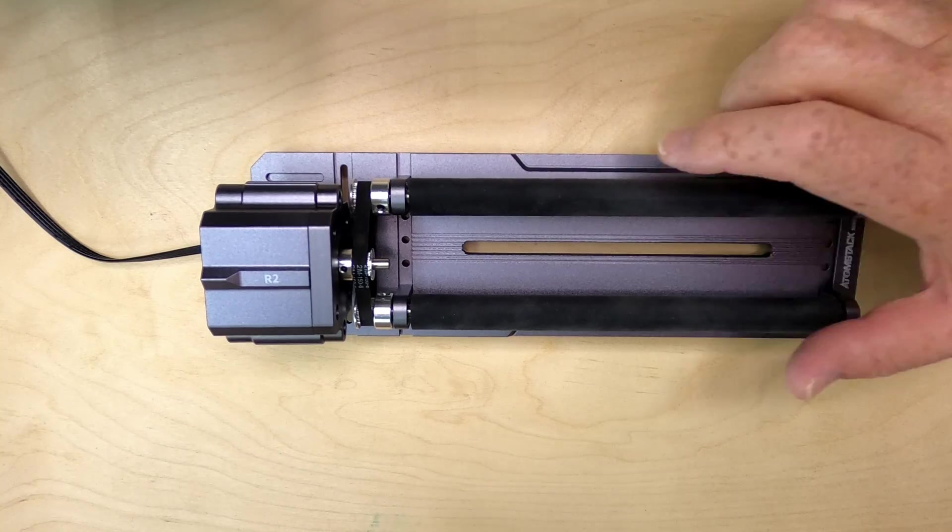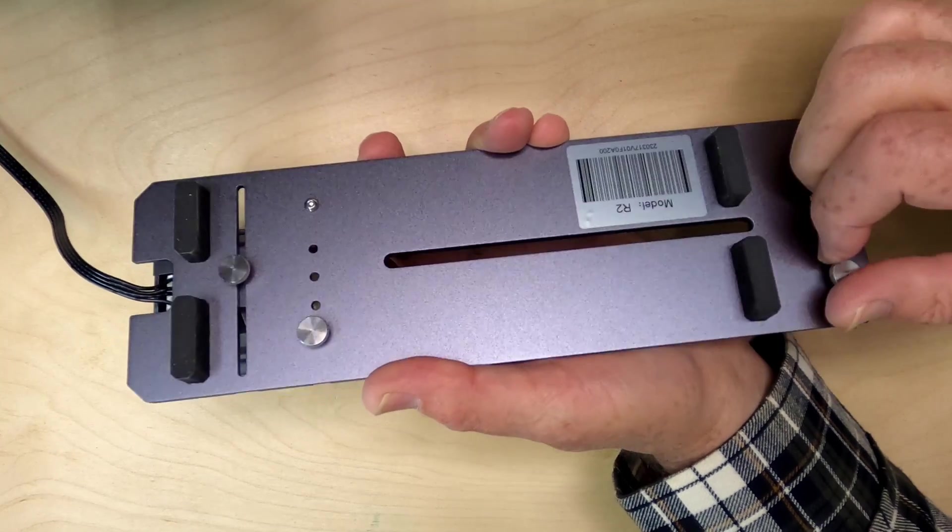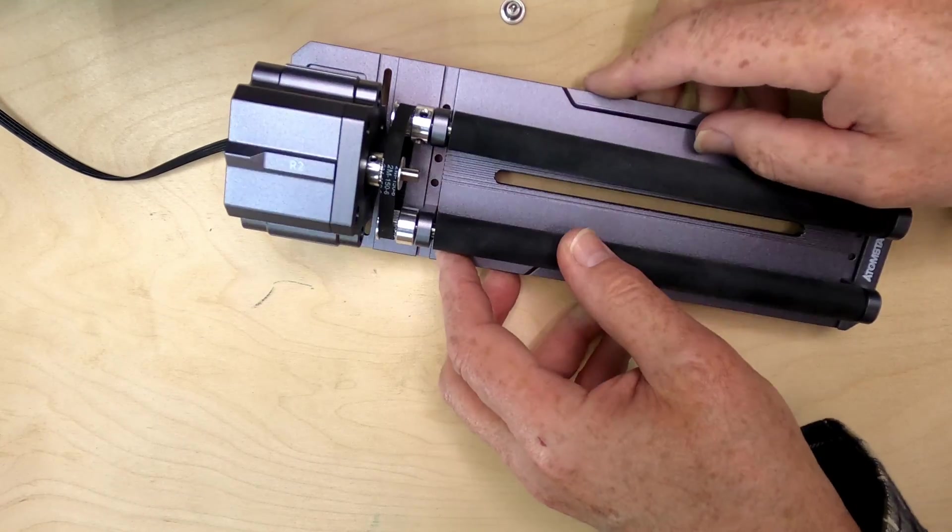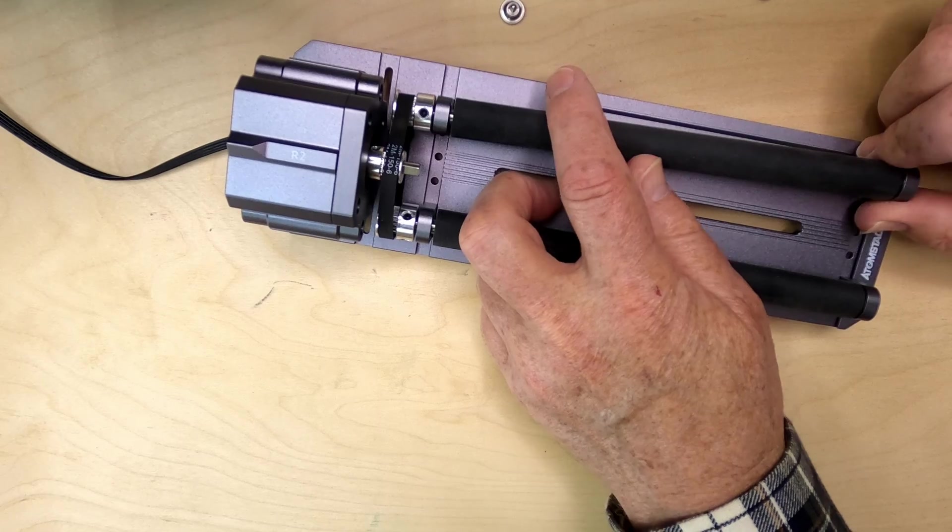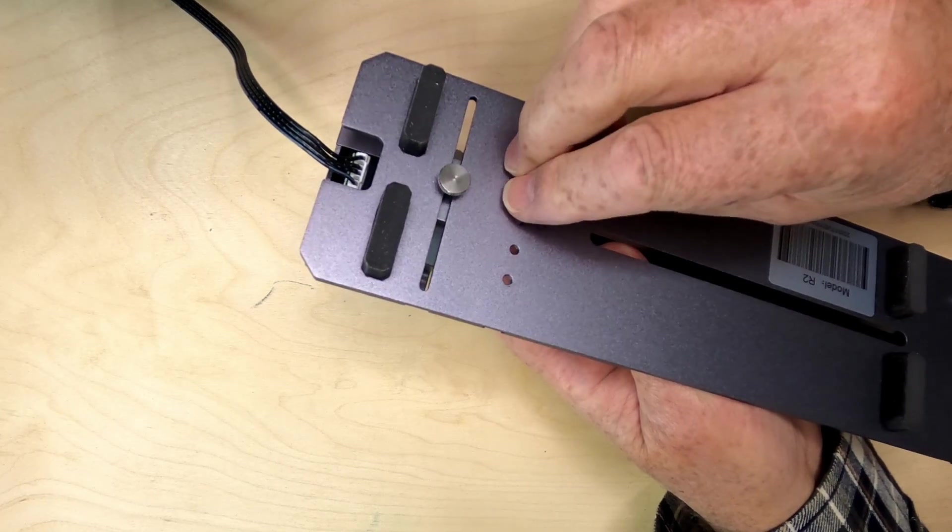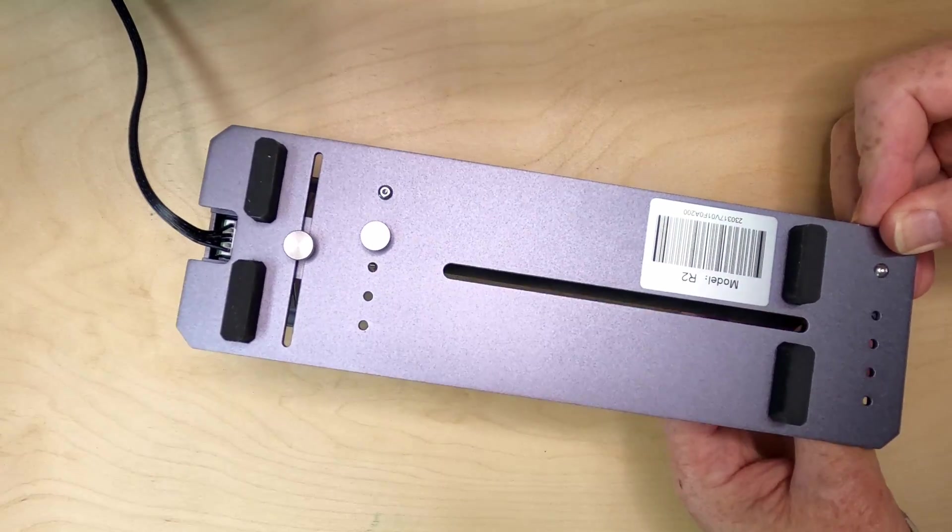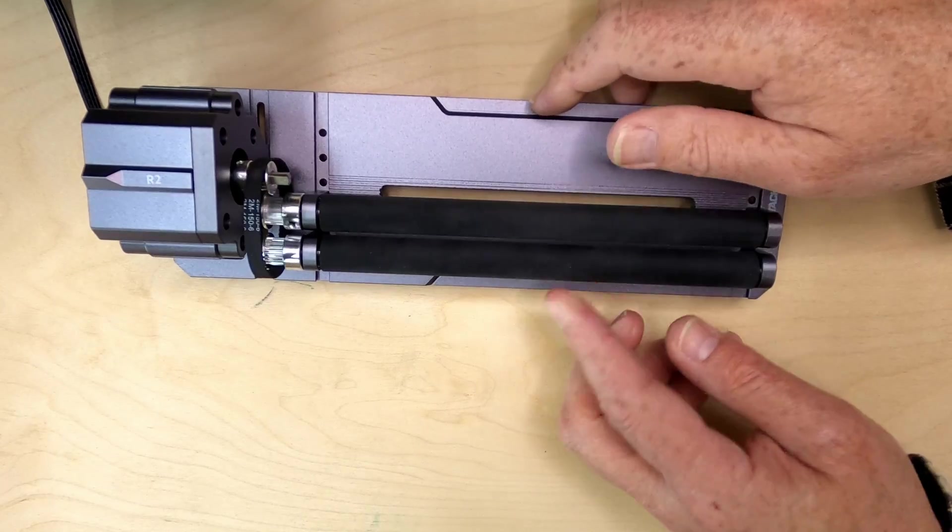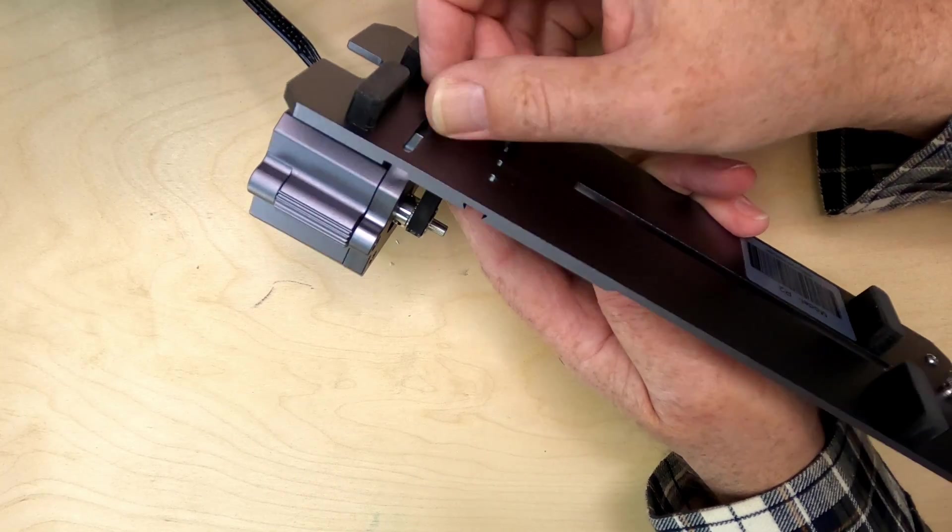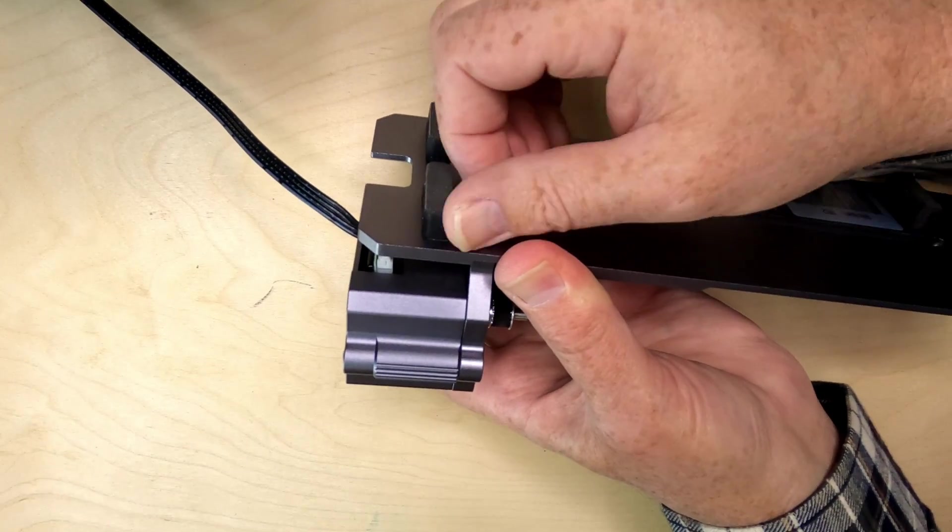Well that worked very well, but what if you want to engrave something that's much narrower in diameter? Atomstack has come up with a real simple solution to that - you just remove these two thumb screws on the bottom and then you have three other positions you can place this in. So we'll put it over to the narrowest one for now, just replace those thumb screws again. All right so those are ready to go, but now of course the belt for the motor is loose. So to change that we just loosen this thumb screw, slide the motor all the way over until it's tight and retighten that thumb screw.